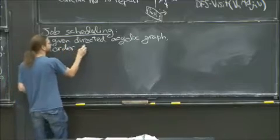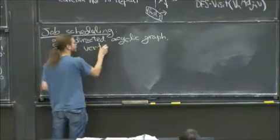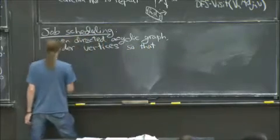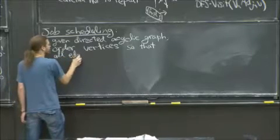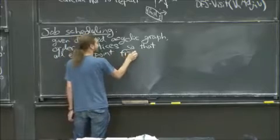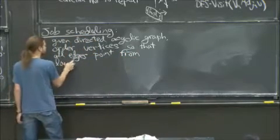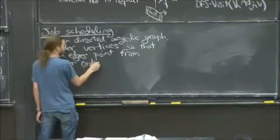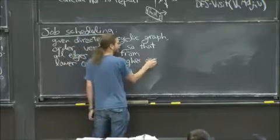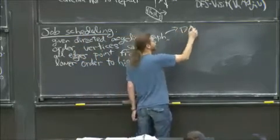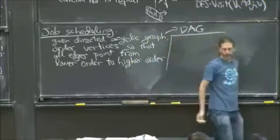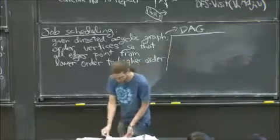If I want to order the vertices so that all edges point from lower order to higher order. Directed acyclic graph is called a DAG. You should know that from 042. And maybe I'll draw one for kicks.